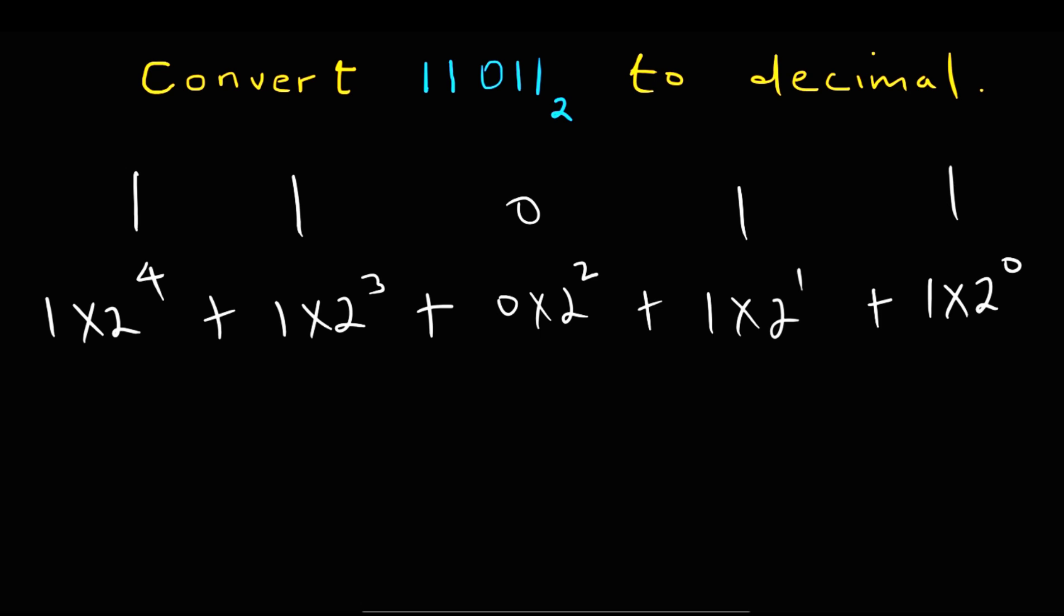So we can simplify this as 1 times 1 plus 1 times 2 plus 0 times 4 plus 1 times 8 plus 1 times 16. So that is just 16 plus 8 plus 0 plus 2 plus 1.